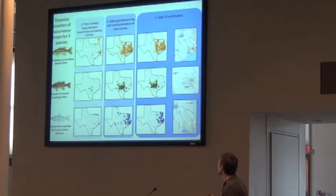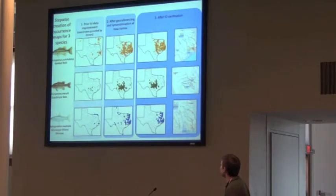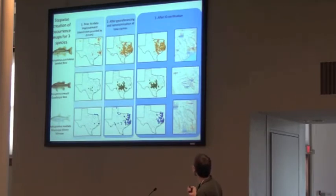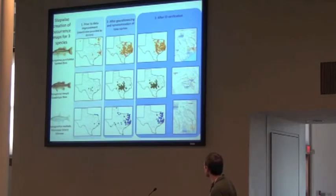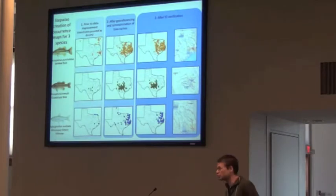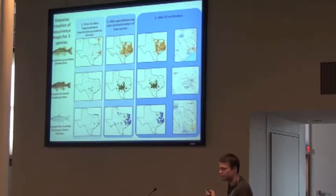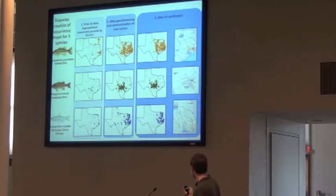The second column shows after we georeferenced and after we synonymized taxonomy, you get a lot more points, but there are still quite a few outliers. Then we've gone through and had a verification step where we looked at specimens and labels and ledgers as much as possible, and we've made the distribution look much more like you would expect. And then we've made the species distribution models which take those point occurrences and convert them to continuous probability coverages.